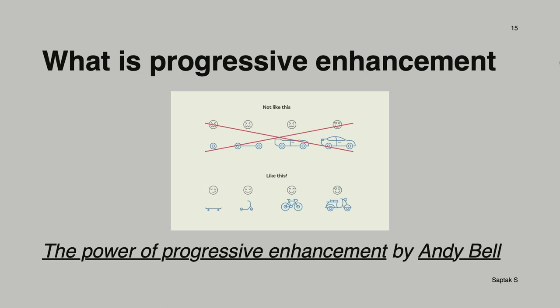The first picture is not progressively enhanced — a car in early stages (one wheel, partial stages) is not really usable. Only when fully complete can you use it. In the second picture, you start with a skateboard — you can move around with it. Then it becomes a bicycle, then a scooter. In every stage it's still usable, but every stage enhances a little bit. That's what progressive enhancement means.